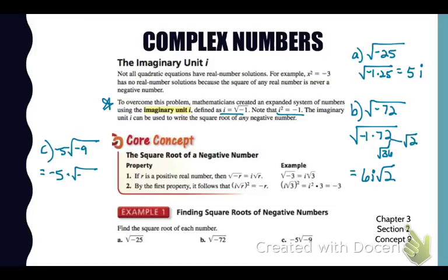So that has to stay as it is. That's our final answer. Now look over on the left of the screen for c. We've got -5 times the square root of -9. So the square root of -9 would be 3i but I have to multiply that by that -5 that was out front. So our final answer is -15i.